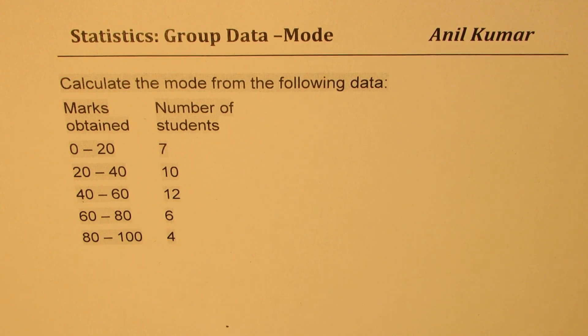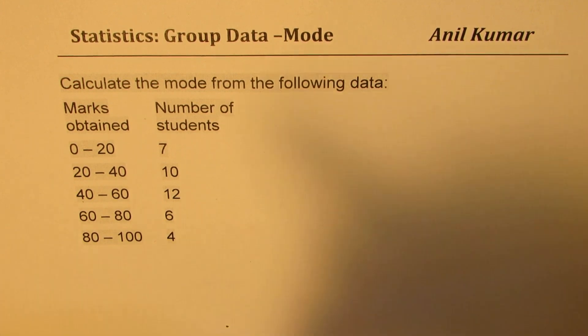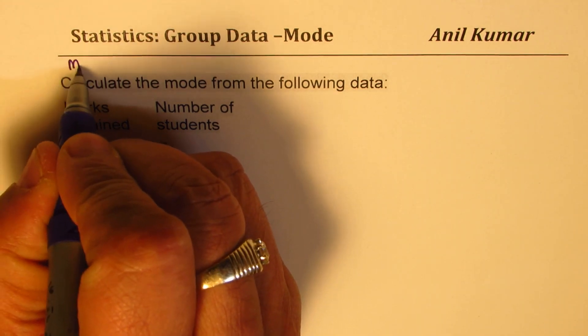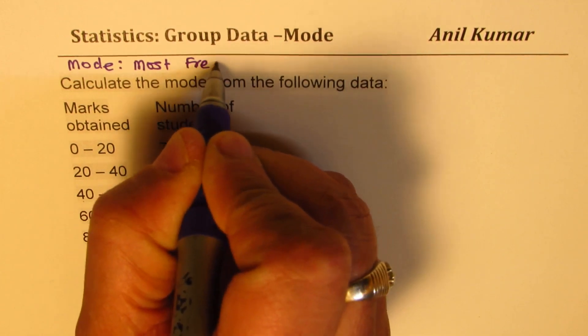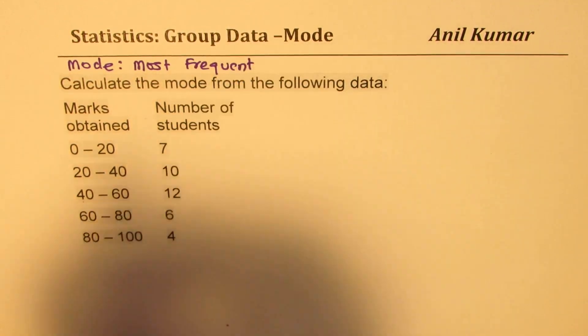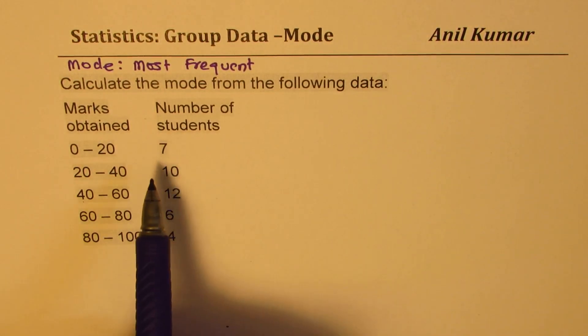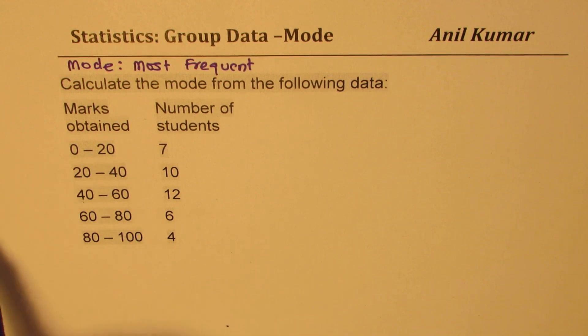So mode basically means most frequent. Now this number 7 could be small, but all 7 students could get 15 marks for example, then it becomes a popular number, right?